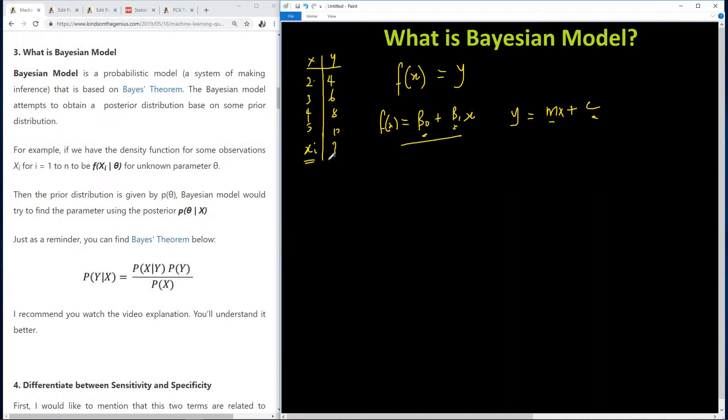And Bayesian model actually tries to obtain a posterior distribution based on prior distribution. Now let me simplify this in the simplest form. So normally we are trying to find out something about a population. Normally we can't find out something about a population by measuring everything in that population. So we actually take some samples from this population.